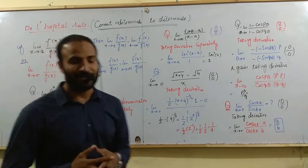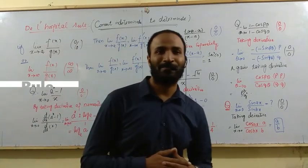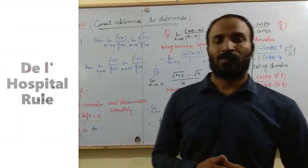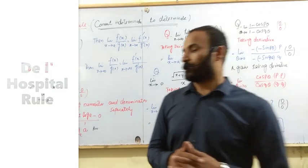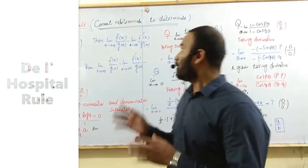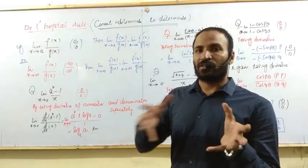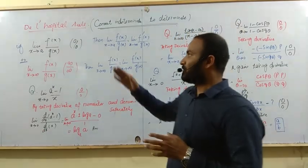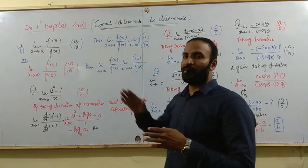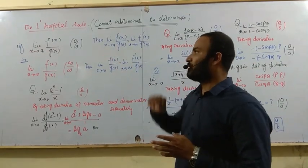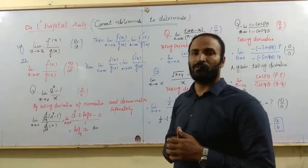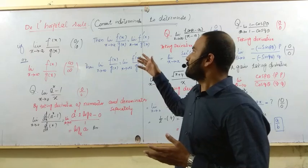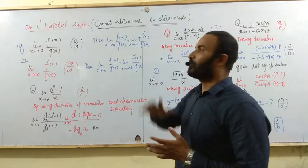Hi students, I am Raj Alayou. Today what we are going to discuss is how we can convert indeterminate form to the determinate form. When you have the indeterminate form, you have 0 over 0 form or infinity over infinity form. How do you convert it to the determinate form?